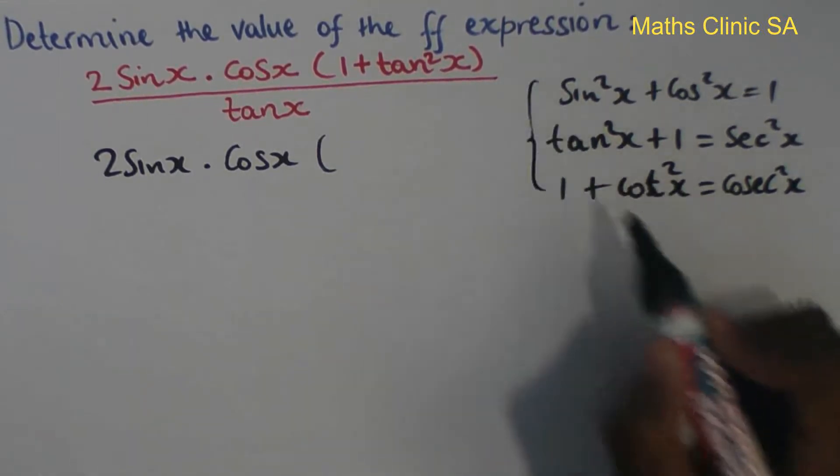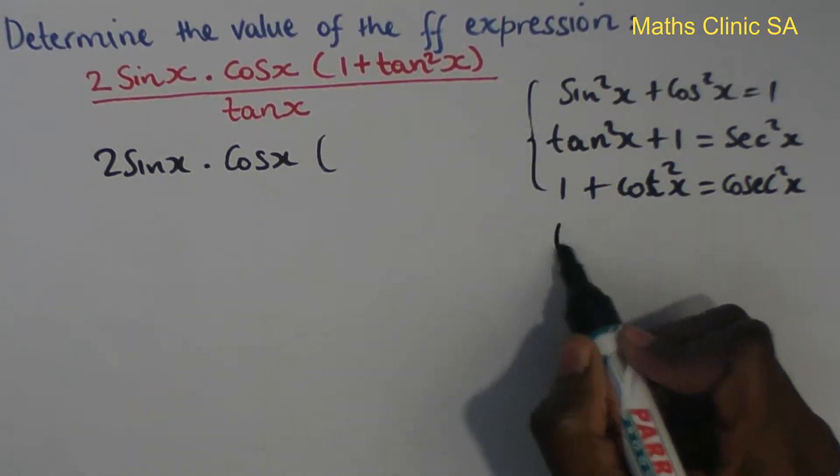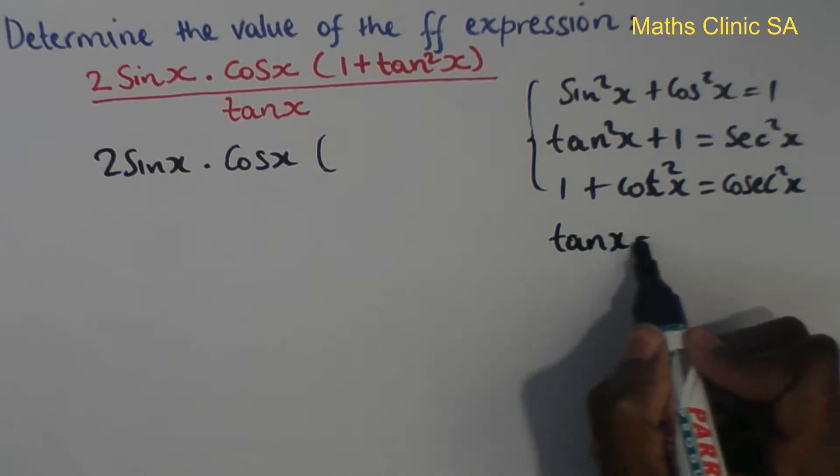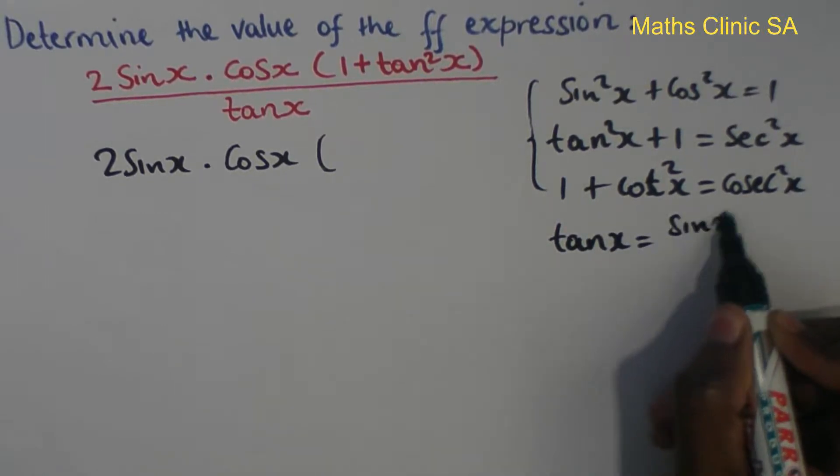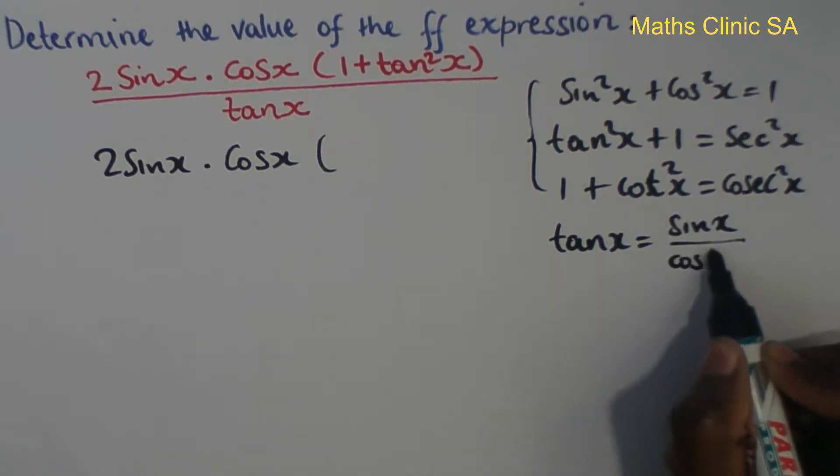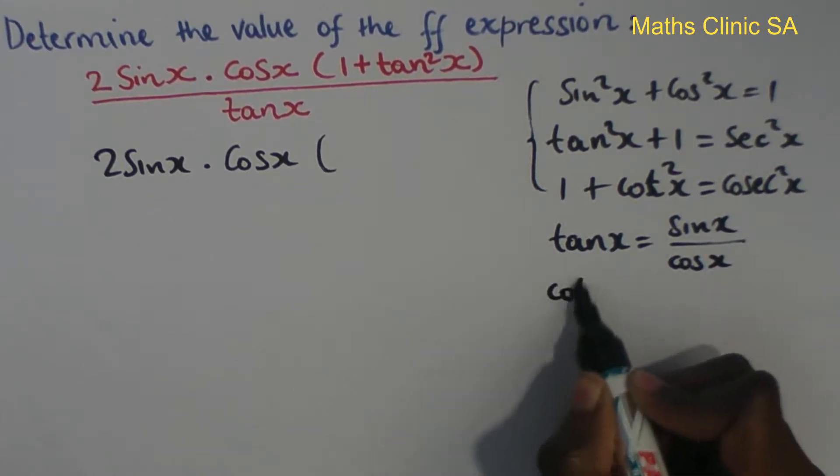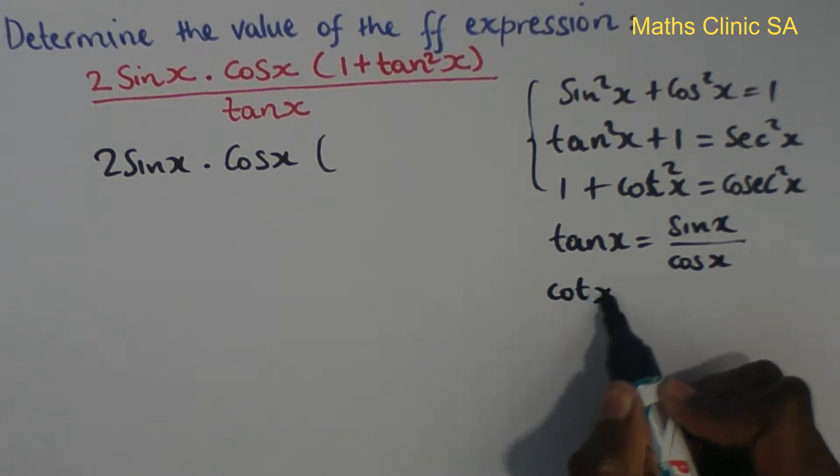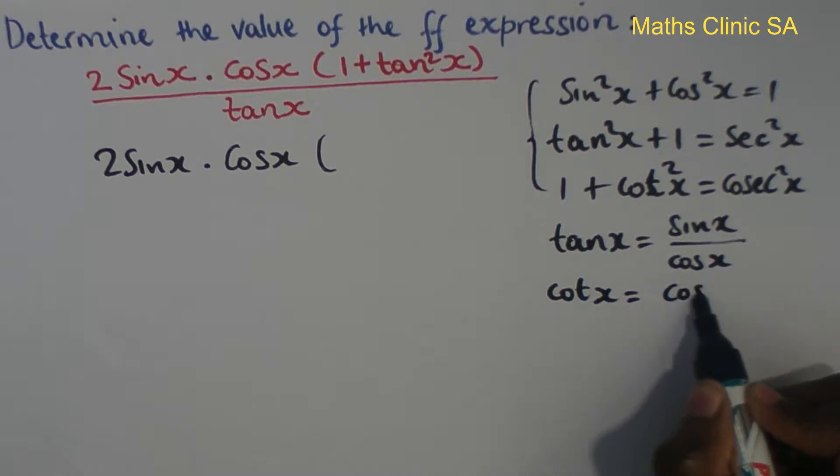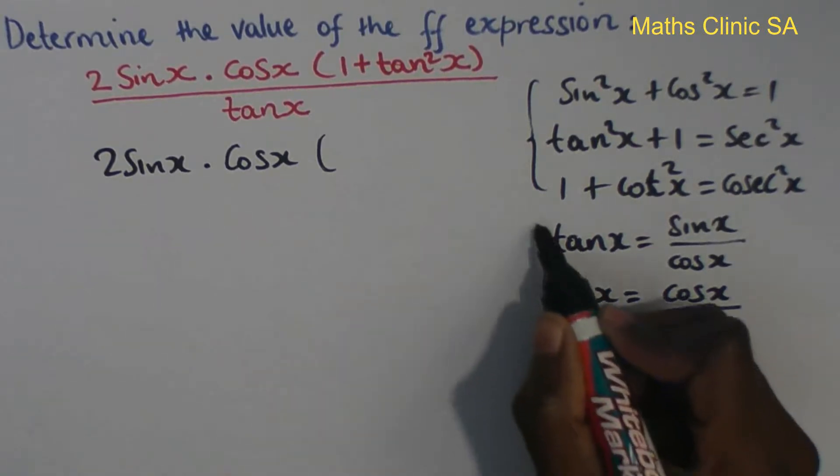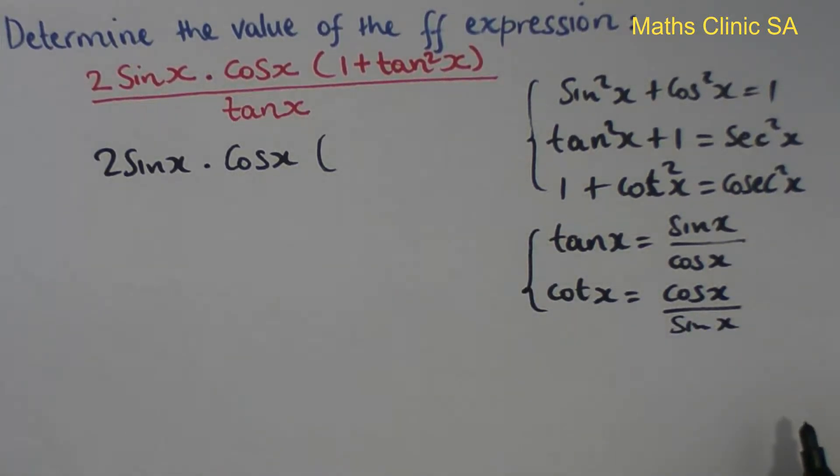And that's the quotient identities. Quotient identity: tan of x equals sine x over cos x. Cot of x, another quotient identity, equals cos x over sine x.